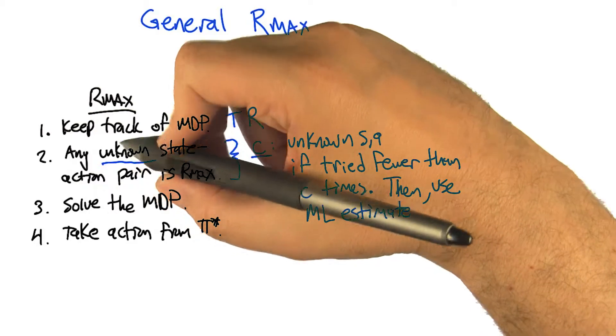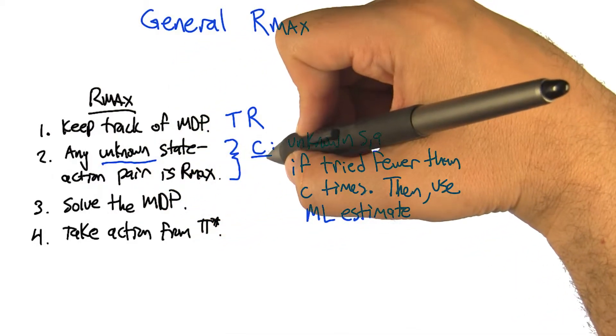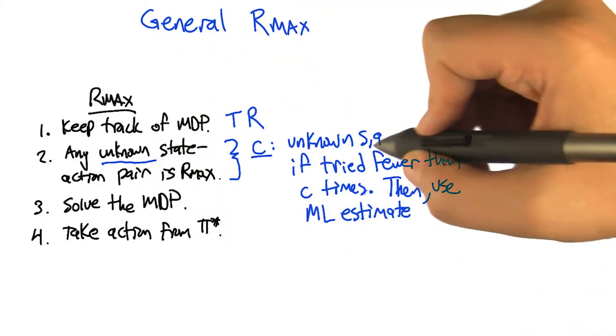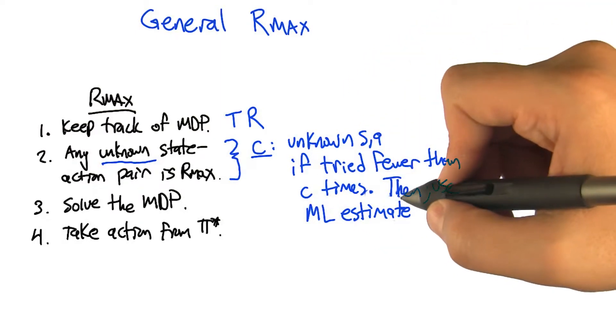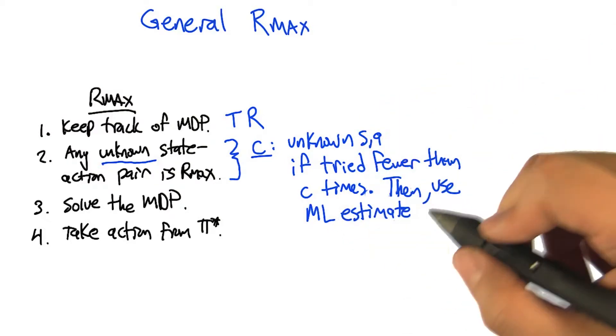So the way that we're defining unknown here is that we have some parameter C, and we consider a state action pair SA unknown if it was tried fewer than C times. After that point, then we switch over to the maximum likelihood estimate.